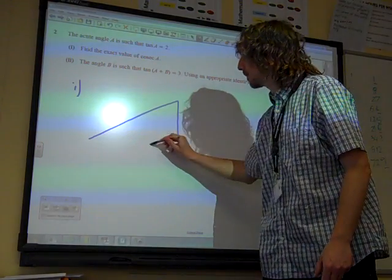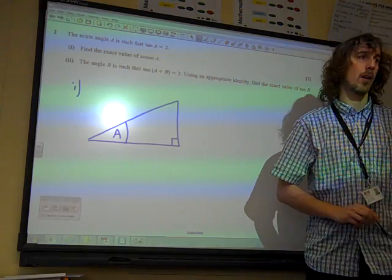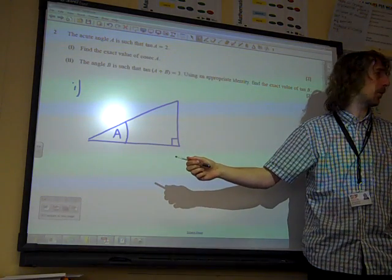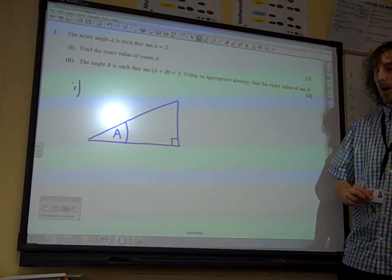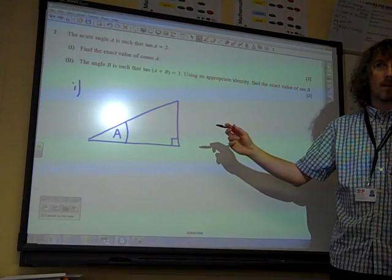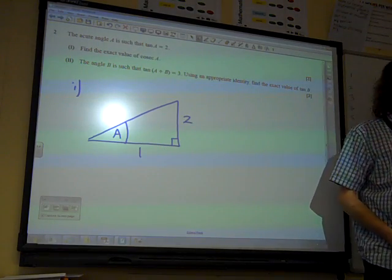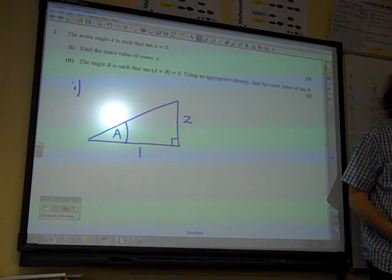All we need, there's the angle A, there's the right angle triangle. The opposite over the adjacent is 2. Well, my triangle is hopelessly out of proportion, but the simplest way of doing this is if that's 2 and that's 1, that gives us the tangent of that angle would be 2.